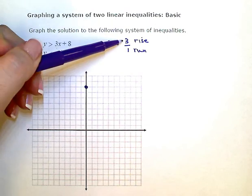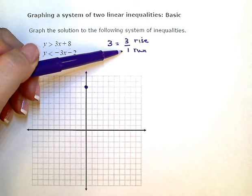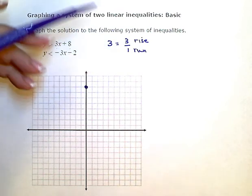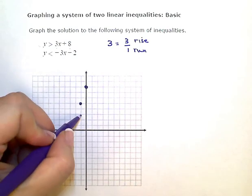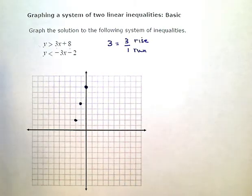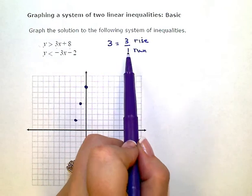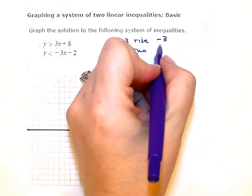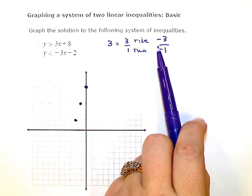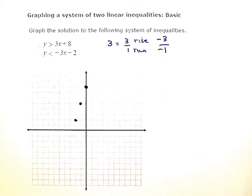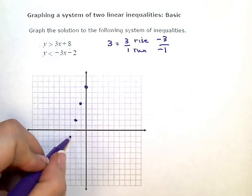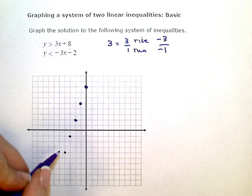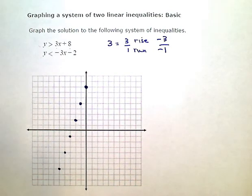Instead of going up 3 over or to the right 1, I'm going to go down 3 and back 1. Down 3, back 1. So in essence, what I did, instead of trying to do a positive 3, positive 1, I did the equivalent of negative 3 over negative 1. So down 3, backwards 1. Down 3, backwards 1. And I'm just going to line up a bunch of dots, plot a bunch of points.